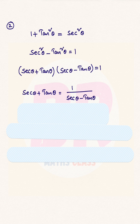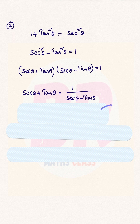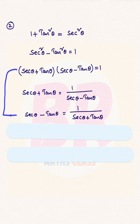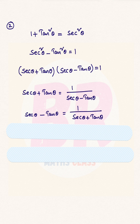From this, secθ + tanθ = 1 / (secθ − tanθ). Similarly, secθ − tanθ = 1 / (secθ + tanθ).